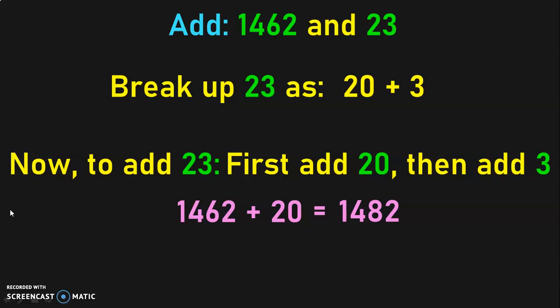Next, add 1482 plus 3. This is also an easy addition which does not require a paper and a pen. So, 1482 plus 3 will give you 1485. This is one method of doing mental math calculation.